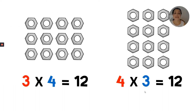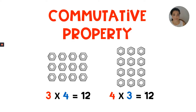So we can say that three times four equals twelve and four times three equals twelve. What do you notice about the two equations? Yes, the order of the factors has switched places, but the product is the same. That is the commutative property.